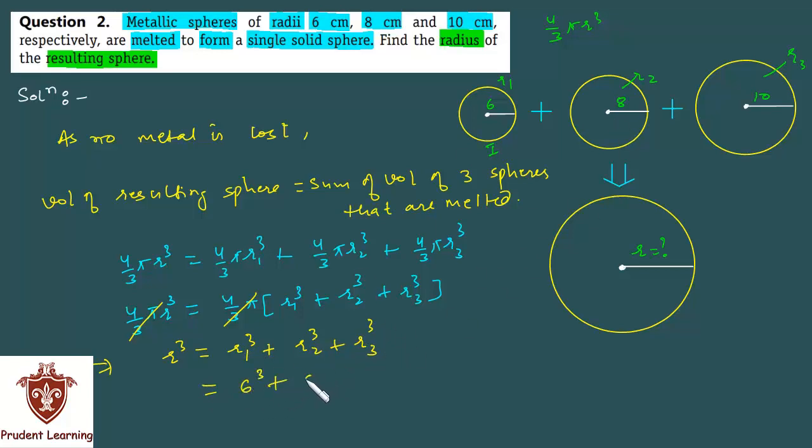And substituting the values of r1 r2 and r3 we have 6 cube plus 8 cube plus 10 cube which gives us r cube as 6 cube is 216 and 8 cube is 512 and 10 cube is 1000 and adding these three numbers we get 1728 which gives us r as cube root of 1728 and we are fortunate to get this number because 1728 is a perfect cube of 12.